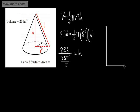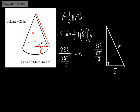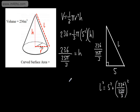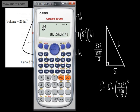The more comfortable you become with dealing with messy fractions, the better. So what we have is: the radius is 5 meters, the perpendicular height is 236 divided by (25 pi over 3), and we need the slant height l. We can use Pythagoras' theorem to find that — l squared equals 5 squared plus the perpendicular height squared. I'll store that height value in the calculator as A in case I need to come back to it.